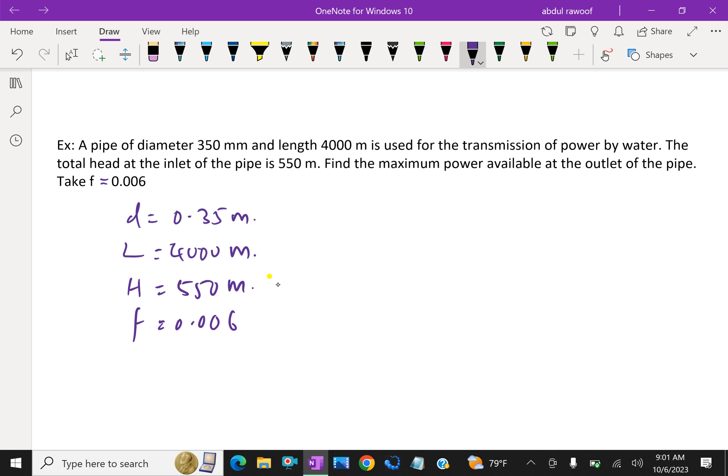For maximum power, the head loss hf is H by 3. So H is 550 by 3 equals 183.33 meter.